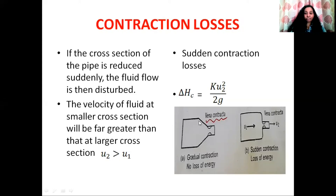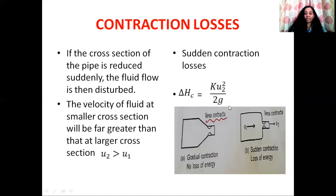For contraction losses, when the cross-section of the pipe is reduced gradually, there is no loss in energy. But when the cross-section is reduced suddenly, a disc current will develop and that results in loss of energy. In this case, the velocity of the fluid in the wider region is very small compared to the narrower cross-section, so we can neglect that value. The energy loss due to sudden contraction can be calculated using: delta HC equals K U2 squared divided by 2G.